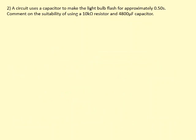The circuit uses a capacitor to make a light bulb flash for approximately 0.5 seconds. Comment on the suitability of using a 10 kilo ohm resistor and a 4800 microfarad capacitor. So in this case we want to work out the time constant RC because this gives us an approximate value for how long the bulb will flash for.